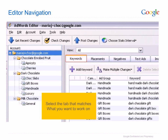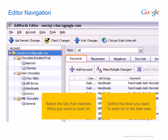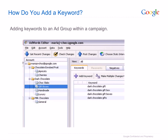Use the tabs to select what element of the campaign you wish to work on. The different levels in the tree view allow you to define which level within the account you wish to work on. If you wish to add keywords to an ad group, first select your chosen ad group within the appropriate campaign in the tree view. Click on the plus icon, then the Add Keyword button located below the navigation tabs. Here we added the keyword 'dark chocolate box' to the Gift Boxes ad group within the Dark Chocolate campaign. If you wish to use a keyboard shortcut, press Ctrl+K.